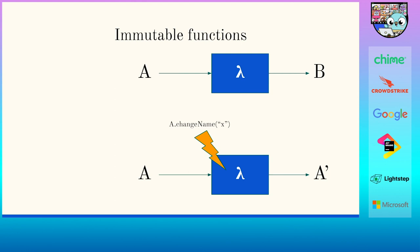Functions should also be immutable. If you have a piece of data called A and send it to a function, B comes out but A remains unchanged inside that function. If you call a change name method inside the function, A would be modified — that's what we want to avoid. In Go, this is easy by making the distinction between pointer values or passing the struct itself, ensuring there are no state changes to our data. This also makes it testable and safer for concurrency.